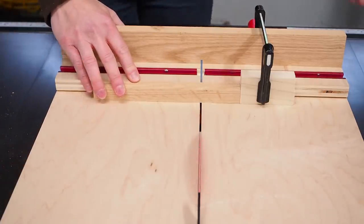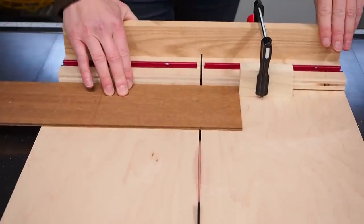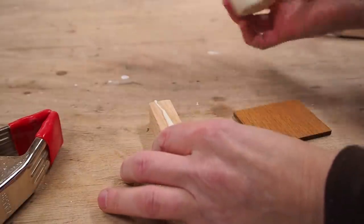The last step is to make a simple stop block that'll ride along the t-track. I used a piece of hardwood with some leftover backer board from an old IKEA dresser but a quarter inch plywood will work just as well.